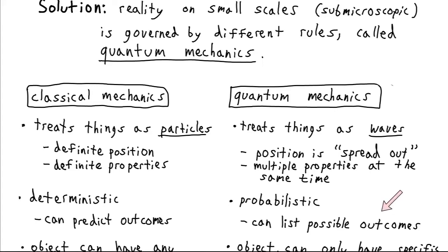Turns out that the rules of quantum mechanics are only probabilistic. And so we're capable of listing possible outcomes, but we don't know for absolutely sure which of those outcomes is going to occur, even if we have the maximum possible amount of information about the system.